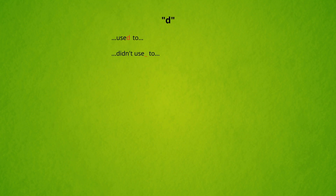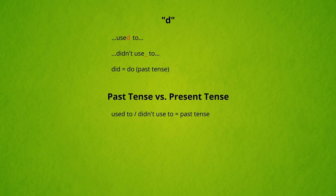Why is there a 'd' in 'used to' but no 'd' in 'didn't used to'? Because 'didn't' is already in the past tense. 'Did' is the past tense of 'do.' 'Used to' is used for past tenses only.